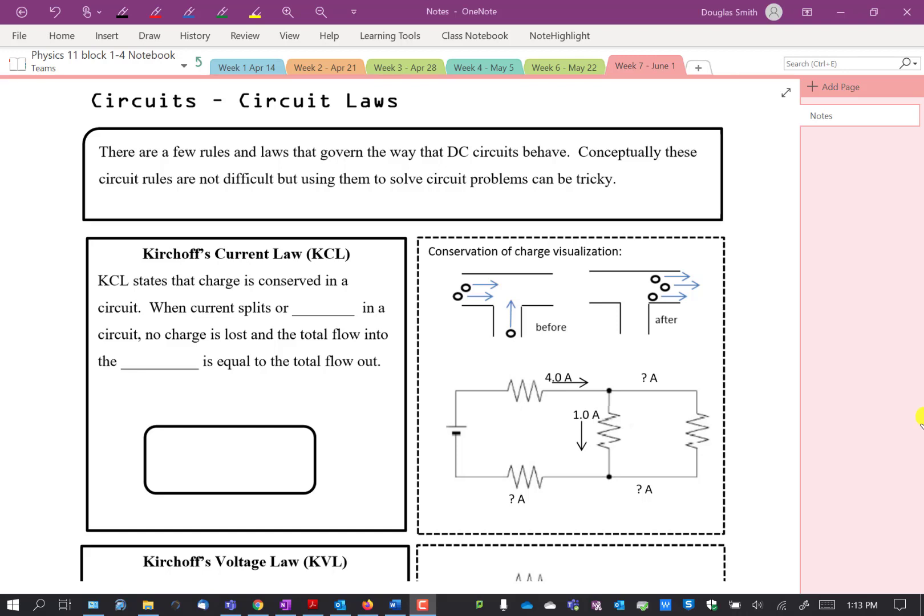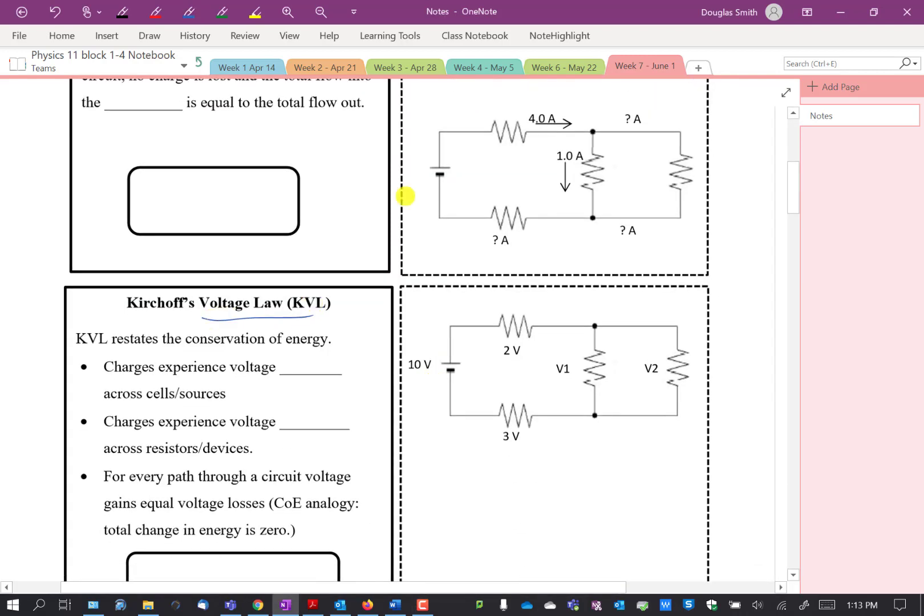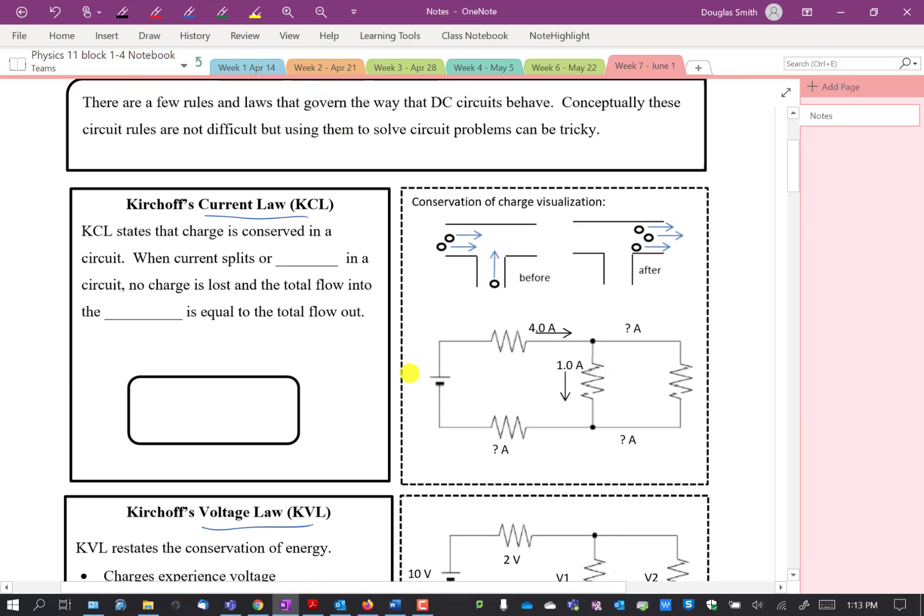In this video I'm going to go over the circuit laws that we can use to analyze electricity flowing through a circuit. There are two major laws we use, called Kirchhoff's laws: Kirchhoff's current law and Kirchhoff's voltage law. The current law is probably the easier one to visualize and understand, and it's also usually the easier one to work with. So that's the one I'm going to start with today.